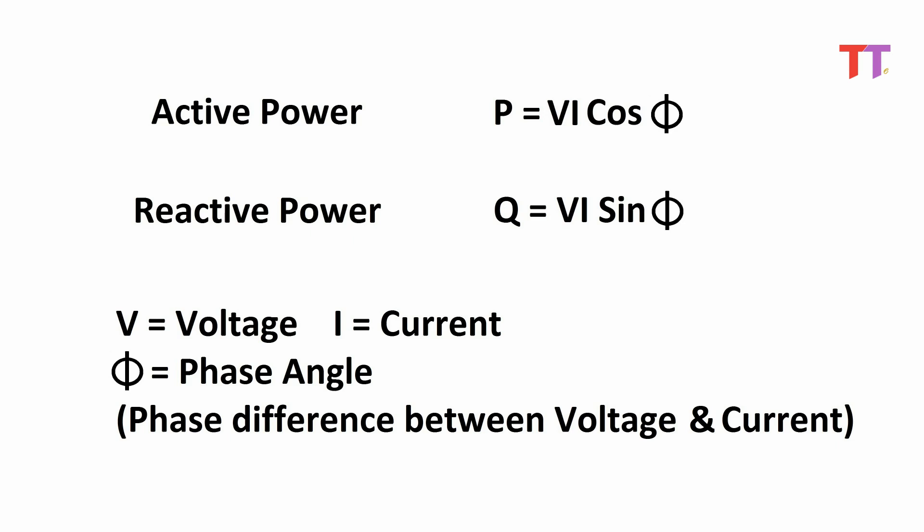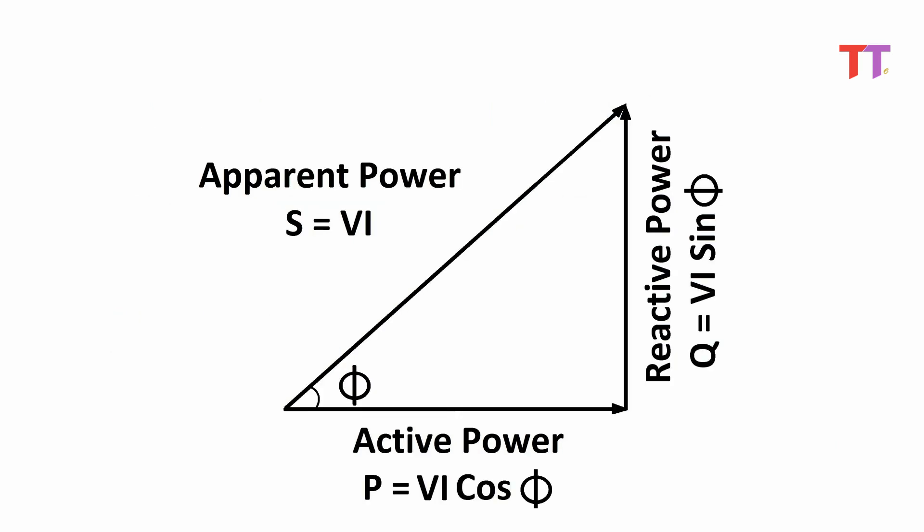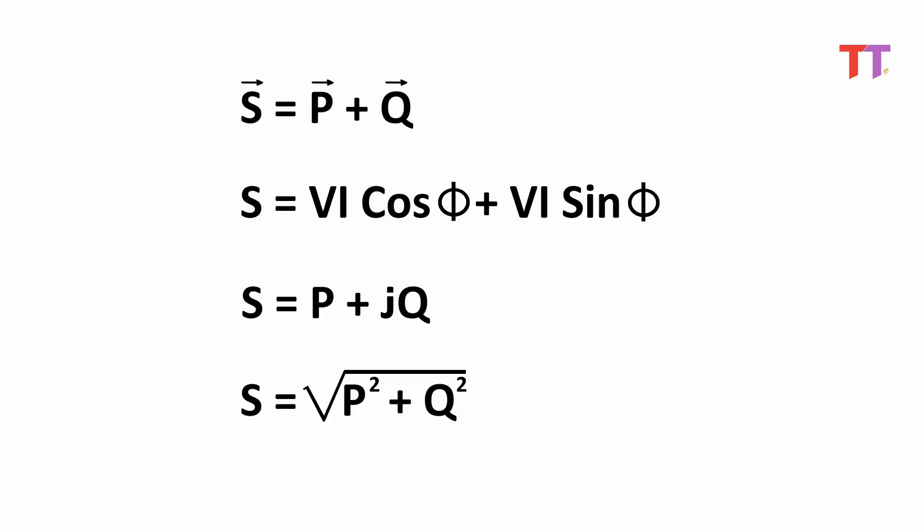Now let's look at the relation between active power and reactive power. Active power P equals VI cos phi, and reactive power Q equals VI sin phi, where V is voltage, I is current, and phi is phase difference between voltage and current. Apparent power is the vector addition of active and reactive power, hence apparent power S equals vector P plus vector Q, so S equals VI cos phi plus VI sin phi. It is also represented as S equals P plus jQ, and in scalar form as S equals square root of P squared plus Q squared. These equations are used in many active and reactive power related calculations.